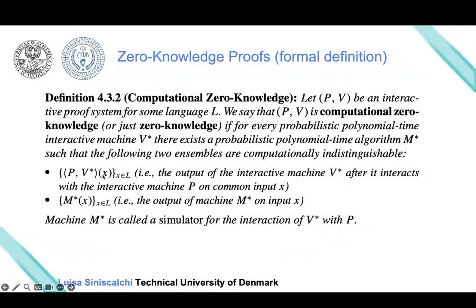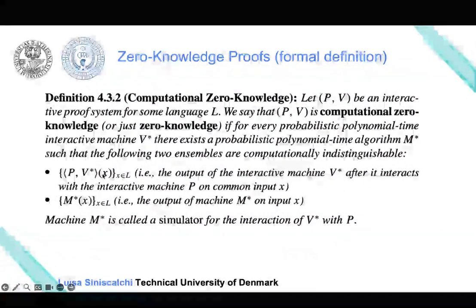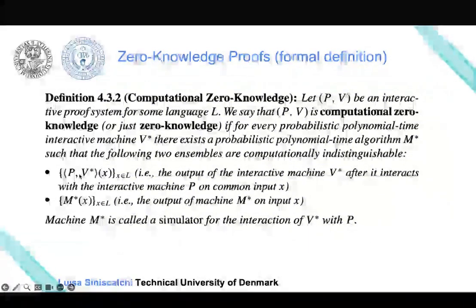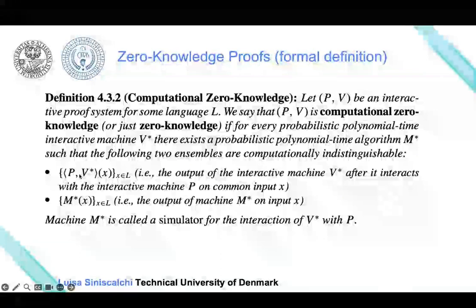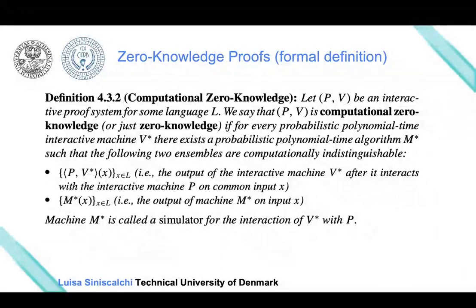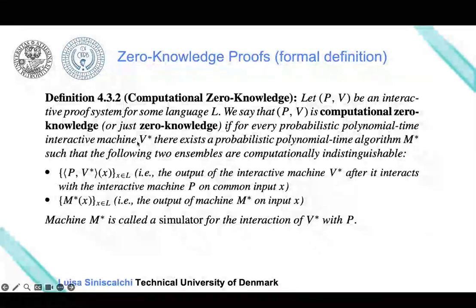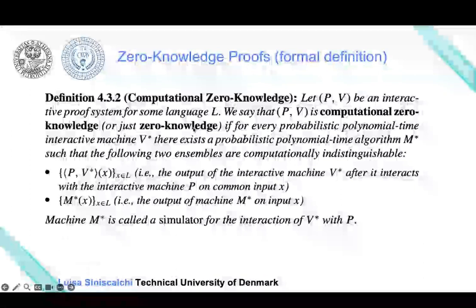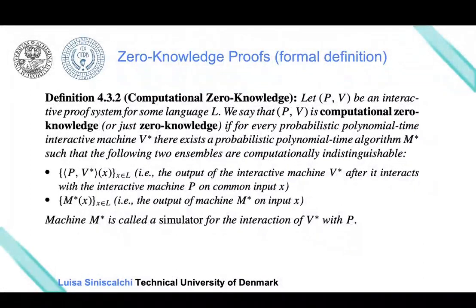Both are executed on input X, but the prover of course will also have access to the witness of X. Note that this definition is for general zero-knowledge, and here we are not restricting to the case of an honest verifier.